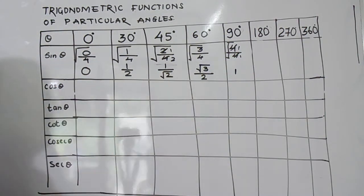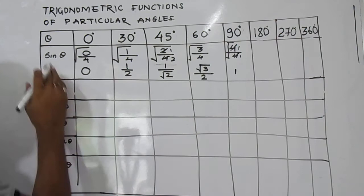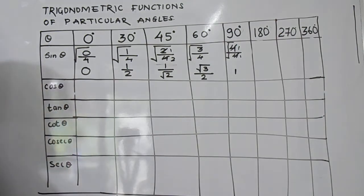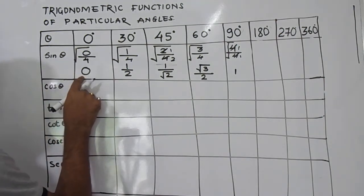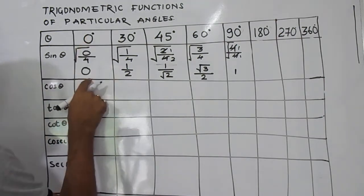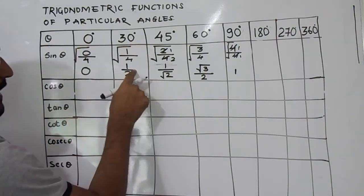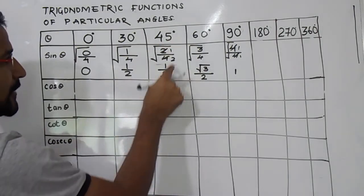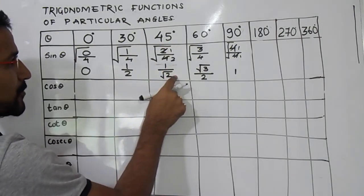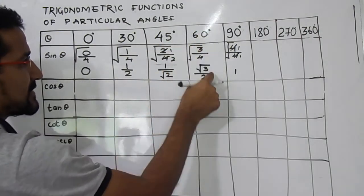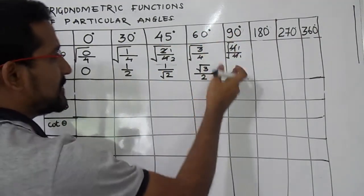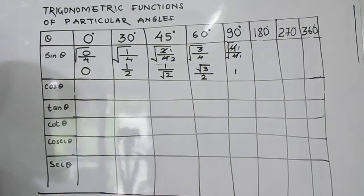This is how you can remember the values of the sine function: sine 0° = 0, sine 30° = 1/2, sine 45° = 1/√2, sine 60° = √3/2, and sine 90° = 1.